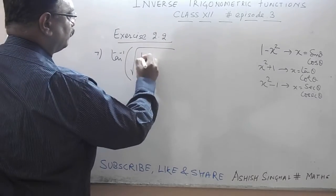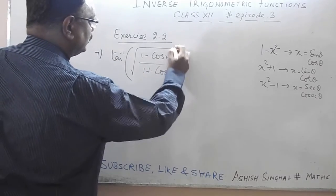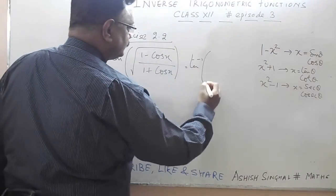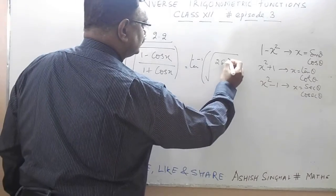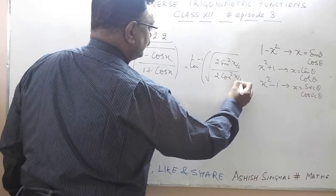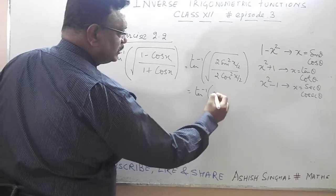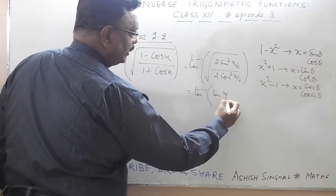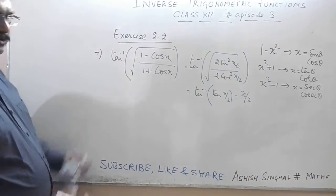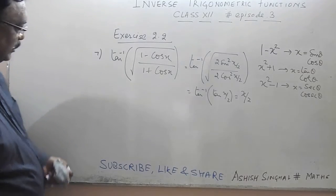Question 7 is tan inverse of √((1 − cos x) / (1 + cos x)). This is a simple question: 1 − cos x = 2sin²(x/2) and 1 + cos x = 2cos²(x/2). Simplifying, we get tan inverse of tan(x/2), so the result is x/2. In this type of question we don't need substitution because the formula applies directly.